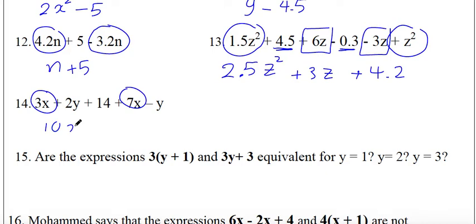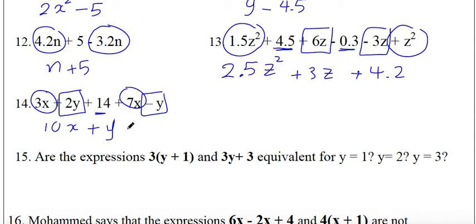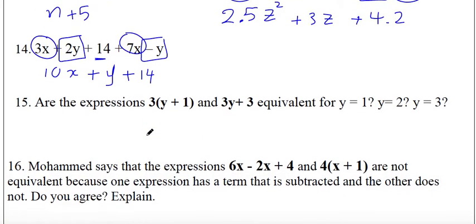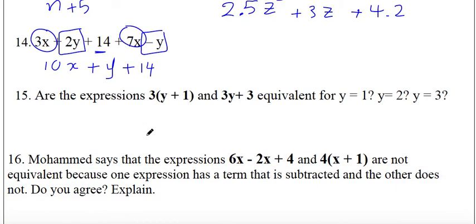For the next simplification: z squared and z are not the same, so collect them separately. 1.5z squared plus 1z squared equals 2.5z squared, and 6z minus 3z equals 3z, and 4.5 minus 0.3 equals 4.2. Finally, 3x plus 7x equals 10x, and 2y minus y equals y, plus 14.